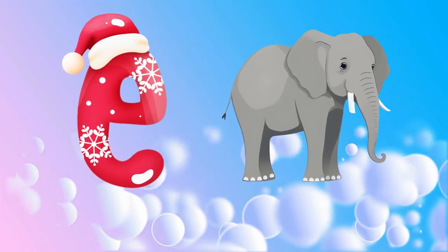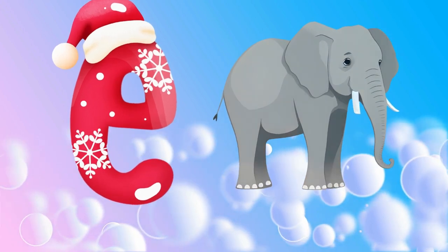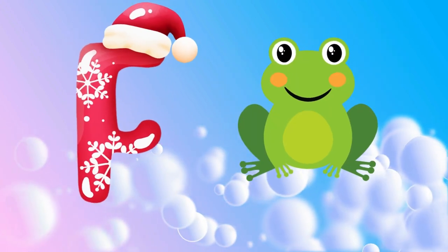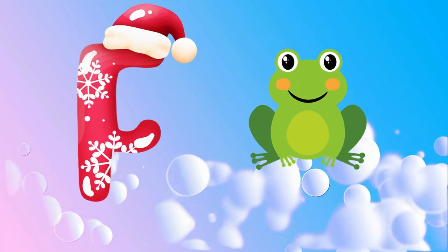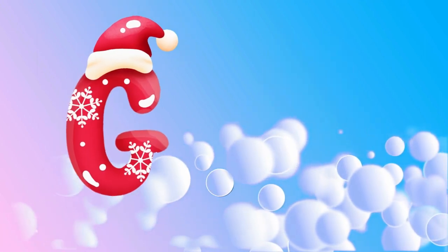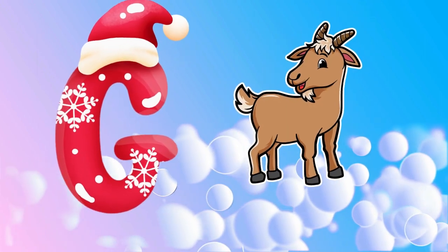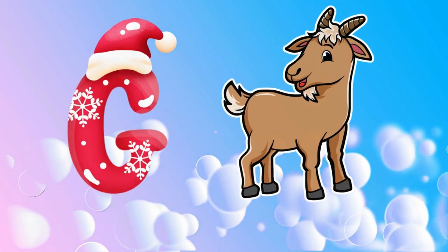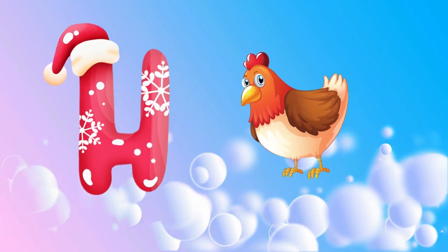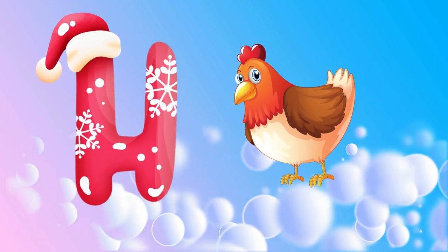E is for elephant, e-e-elephant. F is for frog, f-f-frog. G is for goat, g-g-goat. H is for hand, h-h-hand.